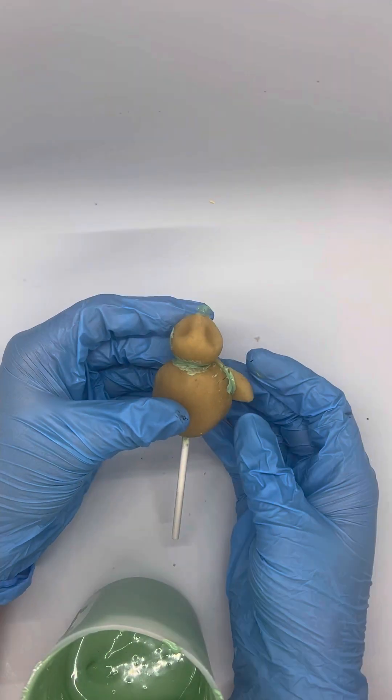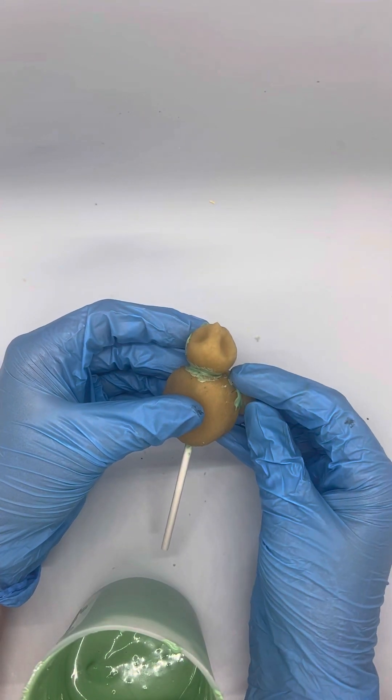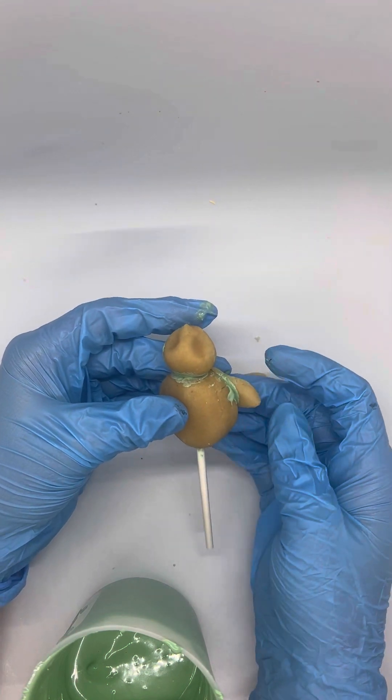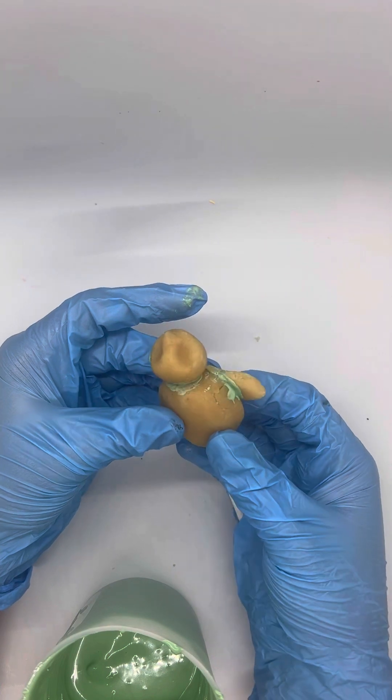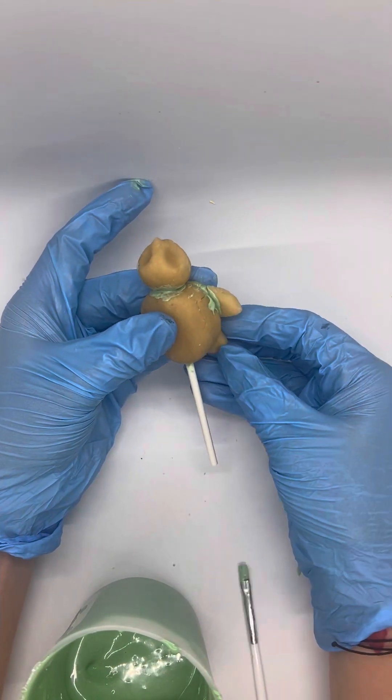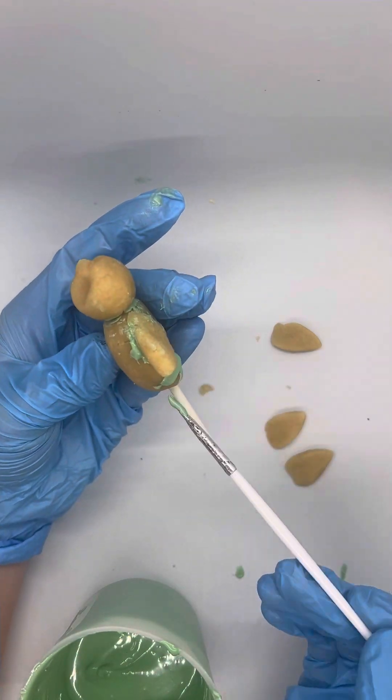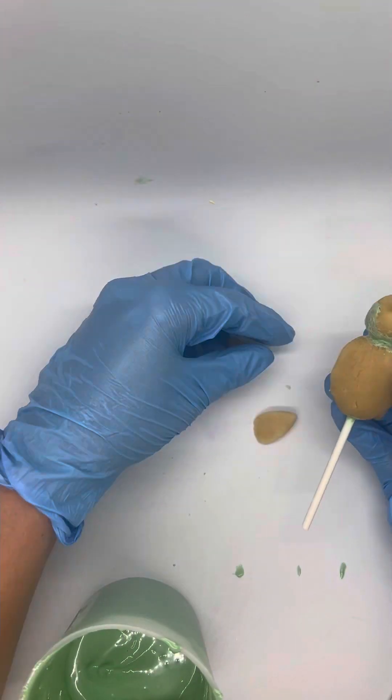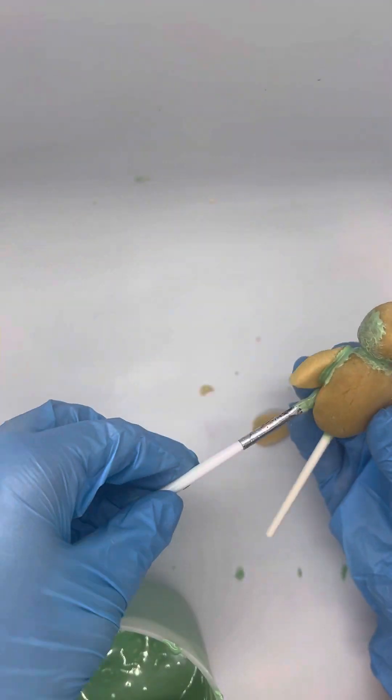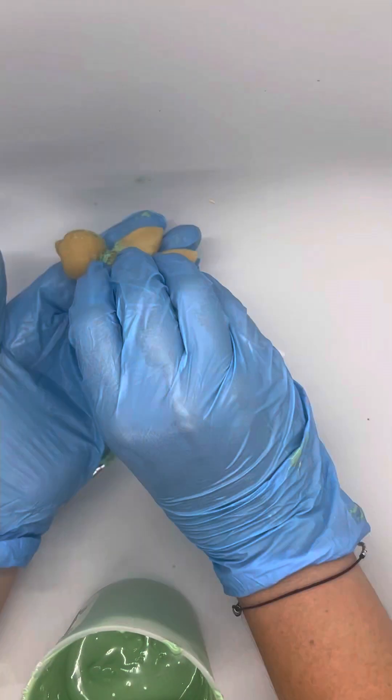This next step, I accidentally forgot to record, so I'm sorry about that, but what I did is I took my stick, and I pushed it through the whole body until it came out about a half an inch on the top, and then I just stuck the head on top of that, and now I'm going to start putting the feet on. So I take my feet, figure out where I want them. I use chocolate to glue it on, and I just do that with all the feet to get them where I want them until we're going to reinforce it by covering it with chocolate all over it.